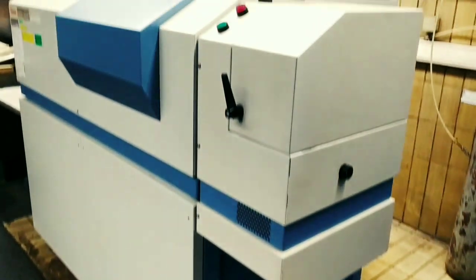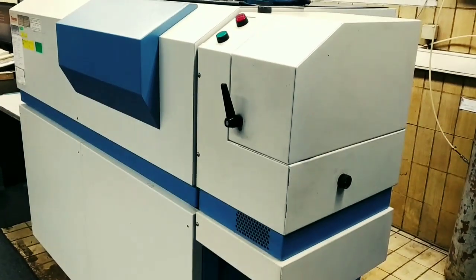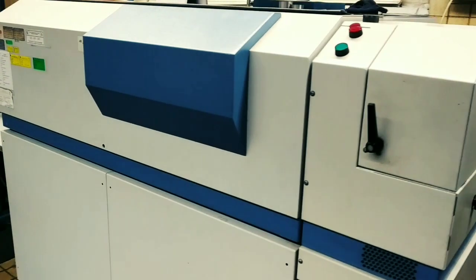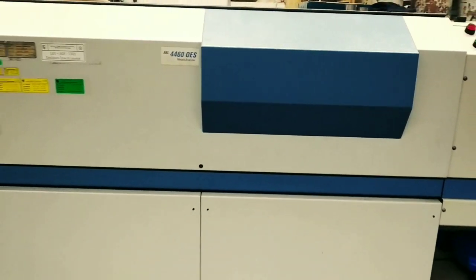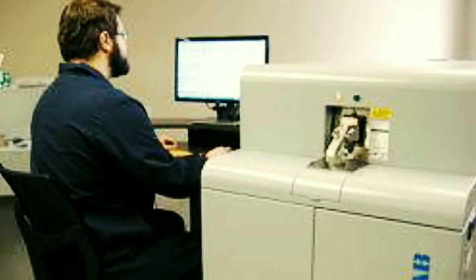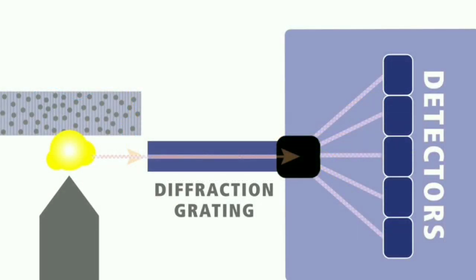Atomic Emission Spectroscopy adalah metode analisis kimia yang menggunakan intensitas cahaya yang dipancarkan dari nyala api, plasma, busur, atau percikan pada panjang gelombang tertentu untuk menentukan jumlah elemen dalam sampel. Panjang gelombang garis spektral atom dalam spektrum emisi memberikan identitas elemen, sementara intensitas cahaya yang dipancarkan sebanding dengan jumlah atom elemen tersebut.